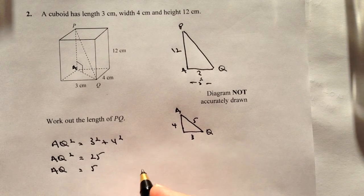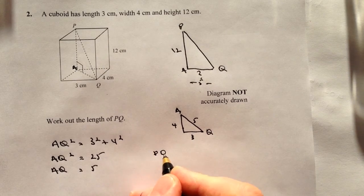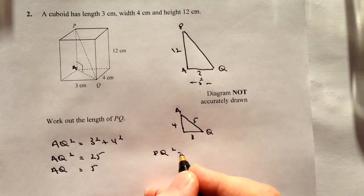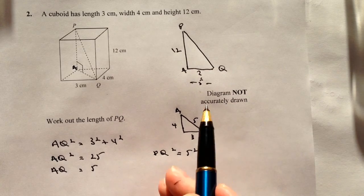So if we pop that dimension in, we've got then PQ, which is what we're looking to find out, equals 5² which is this one here, plus 12² which is this one along here.